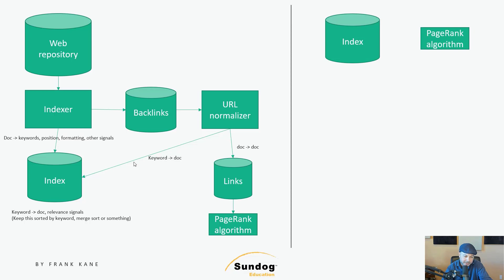At this point, the two main pieces we have are a big index that maps keywords to documents and various signals of that keyword's relevance to the document, and something computing PageRank given a database of all the links between documents on the web. That index contains a bunch of rows for each keyword mapping them to documents and how they were formatted and positioned within the document, so something needs to score all of those relevant signals into some sort of score that we can later use for ranking.